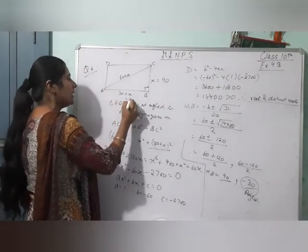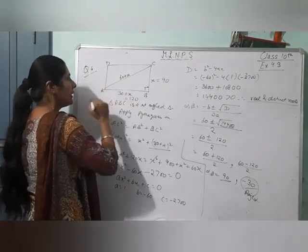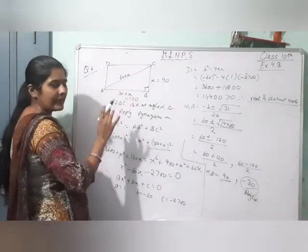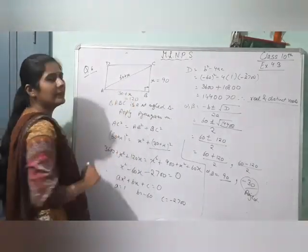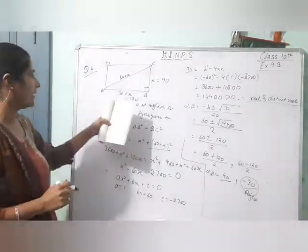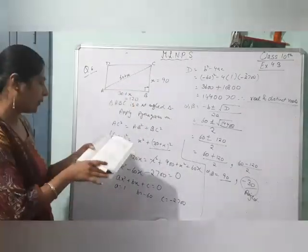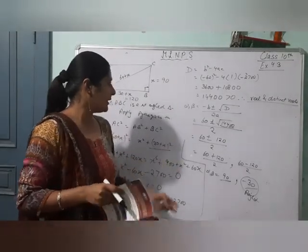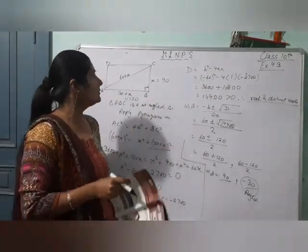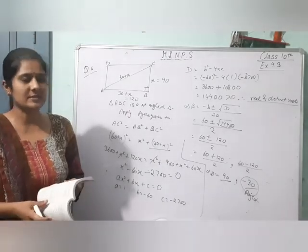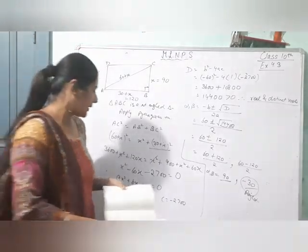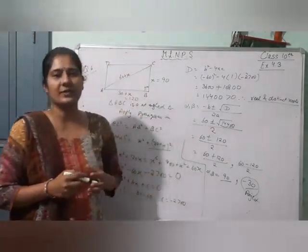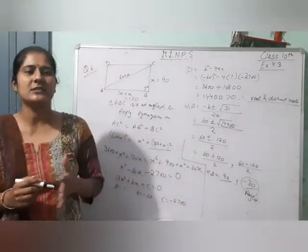X ki value ya toh 90 hai ya minus 30. Side negative nahi ho sakti, so minus 30 reject kar dete hain. Shorter side ki value 90 ho gayi. Longer side: 90 plus 30 equals 120. The sides of the rectangular field are 90 and 120. Toh we have done questions up to question number 6. Baaki ke questions we will do in the next video.